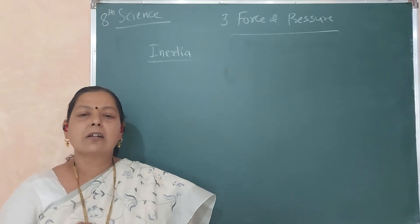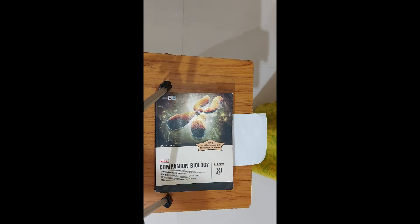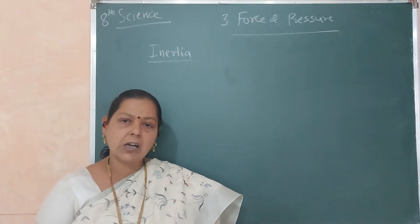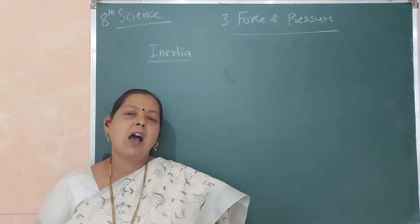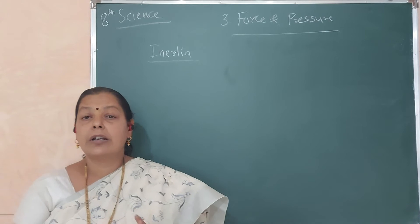The third activity: here is a heavy book placed on a paper. I am pulling the paper. It is observed that there is no change in the steady state of the book. The conclusion is that as the book is heavy, it does not change its state and remains as it is. From all three activities, we can say that these are examples of inertia.